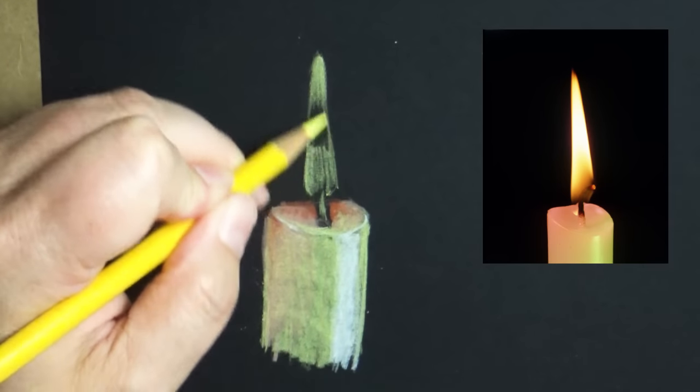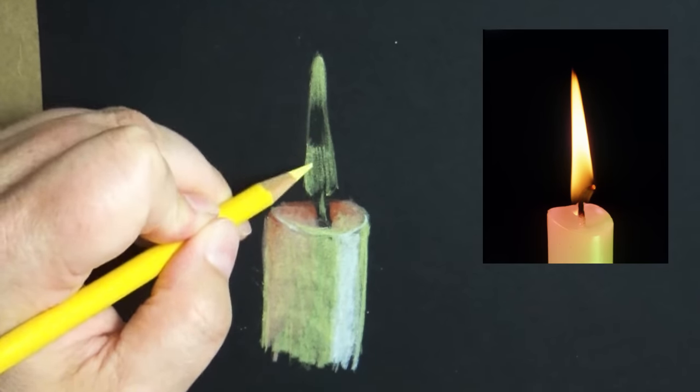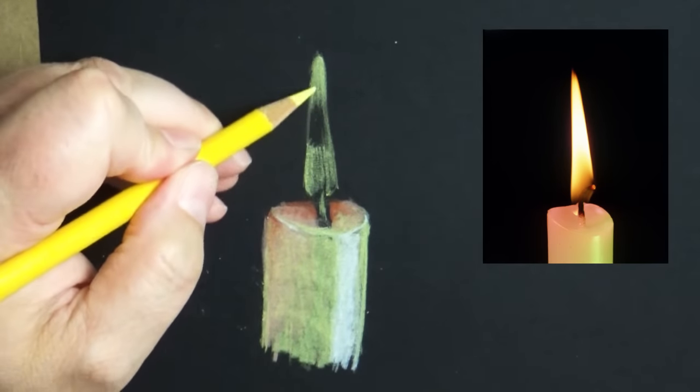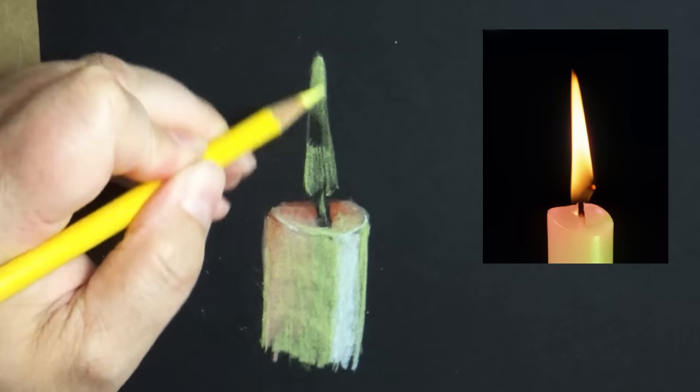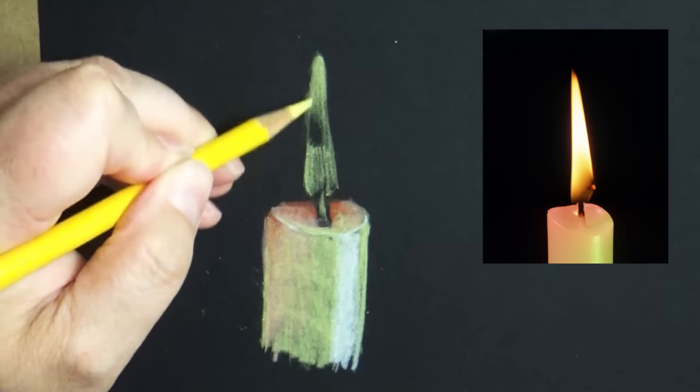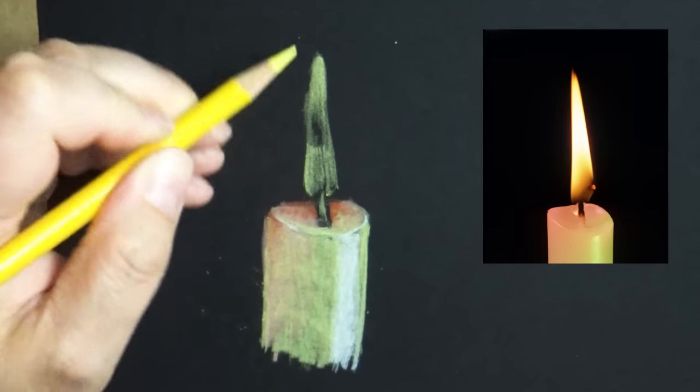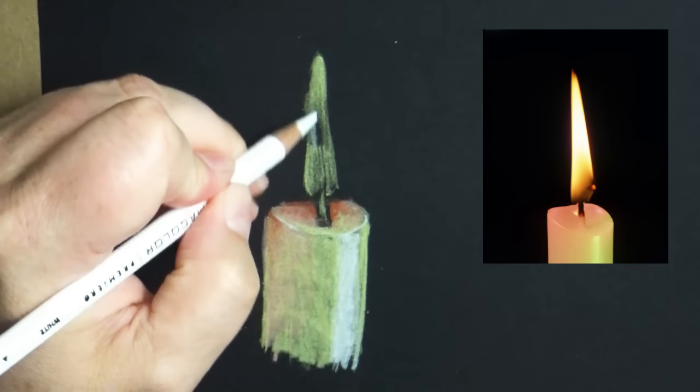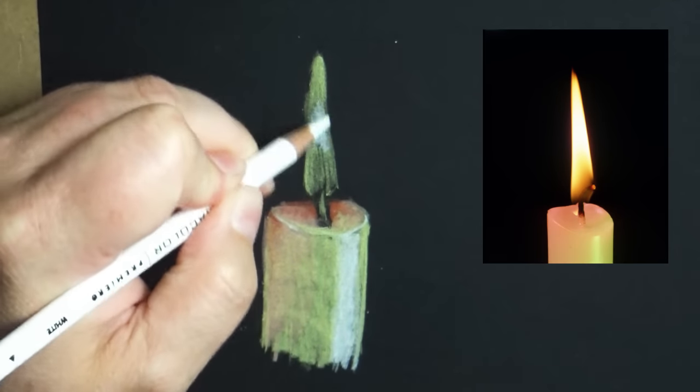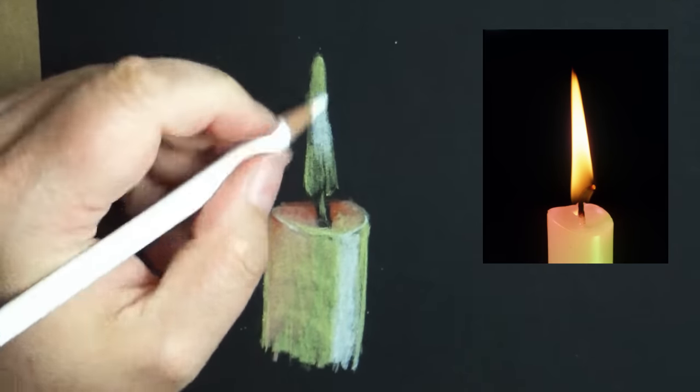As it gets towards this middle part as you see in the reference that's the brightest part of the candle. It's almost pretty much white right there. So I don't want to put too much yellow in there. I can go back in with my white and really begin to apply some of that white in there.